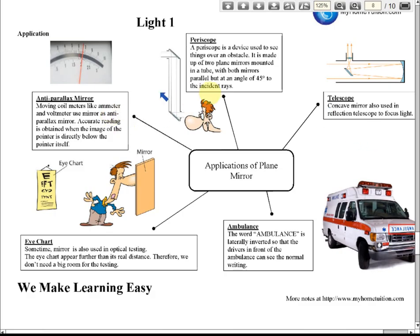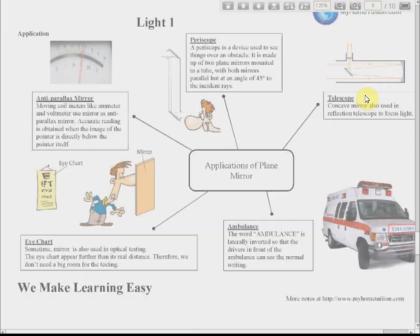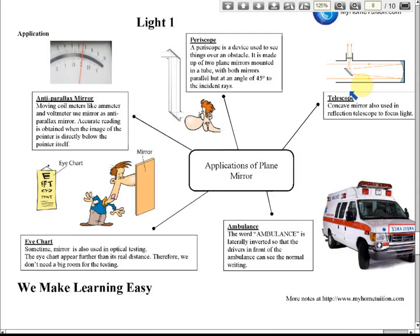Finally, there is the telescope. There are two types: one uses two lenses (eyepiece and objective lens), and the other is a reflective telescope, which uses only one lens together with a concave mirror. Inside the reflective telescope, a concave mirror converges and focuses the light rays, and a plane mirror reflects the light to the eyepiece. This is also an application of a plain mirror.